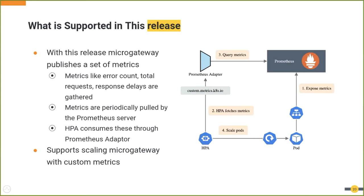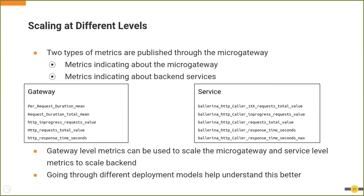The metrics exposed by micro gateway can be separated into two categories. There are metrics that indicate the health and occupancy of the micro gateway — such as the number of concurrent requests, total number of responses, and time spent inside the micro gateway — which can be used to determine whether to scale the micro gateway. There's also another set of metrics about the backend, giving information like the time for the backend to respond, the number of 2xx or 4xx responses, and total responses. These metrics can be used to scale the backend.